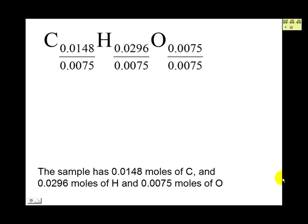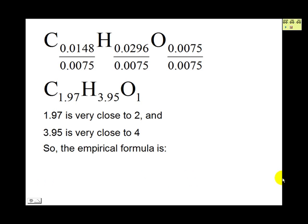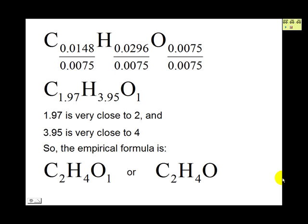Dividing each subscript by 0.0075: 0.0148 divided by 0.0075 is 1.97, 0.0296 divided by 0.0075 is 3.95, and 0.0075 divided by itself is 1. Now 1.97 is very close to the whole number 2, and 3.95 is very close to 4. So the empirical formula, or simplest formula, is C2H4O.